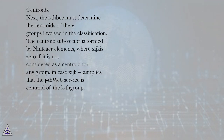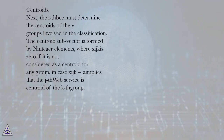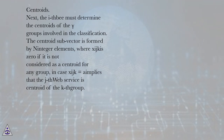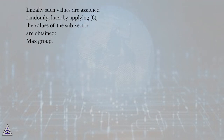Next, the algorithm must determine the centroids of the gamma groups involved in the classification. The centroid subvector is formed by integer elements, where z(l,k) equals 0 if it is not considered as a centroid for any group; in the case where z(l,k) equals k, it implies that the j-th web service is the centroid of the k-th group. Initially such values are assigned randomly; later, by applying equation 6, the values of the subvector are obtained.